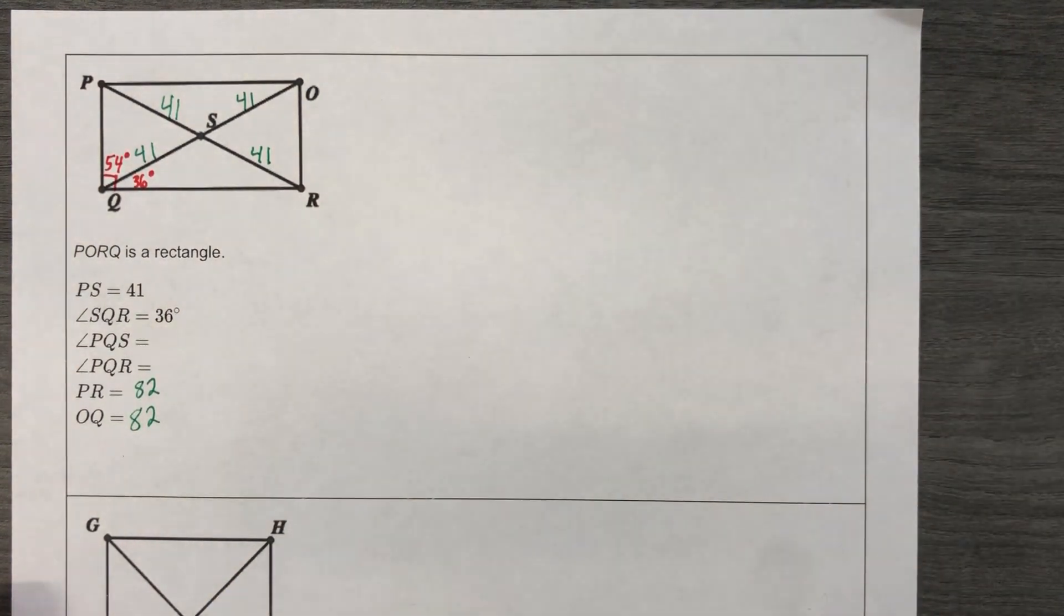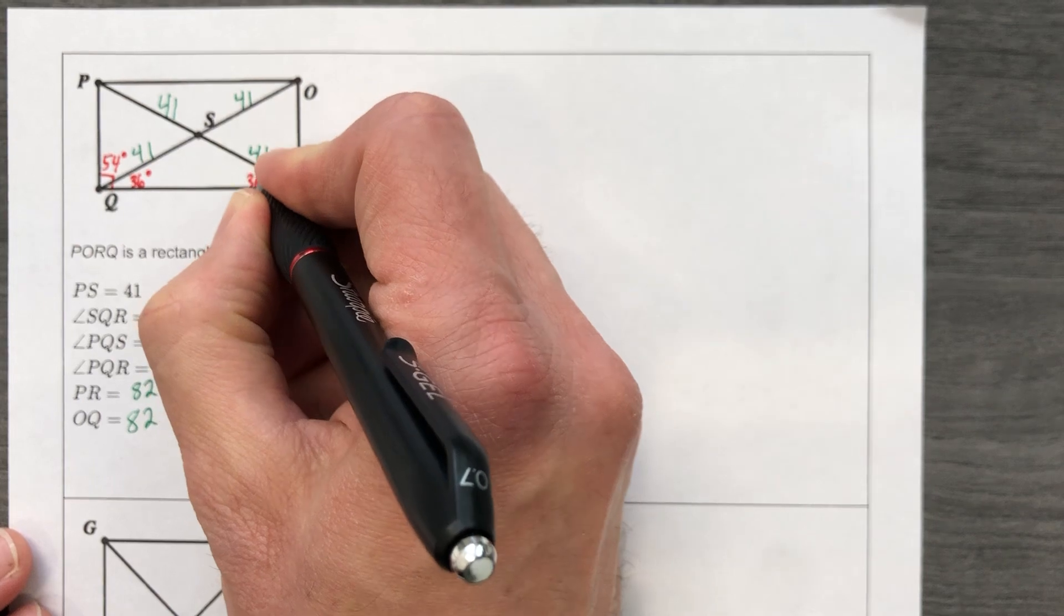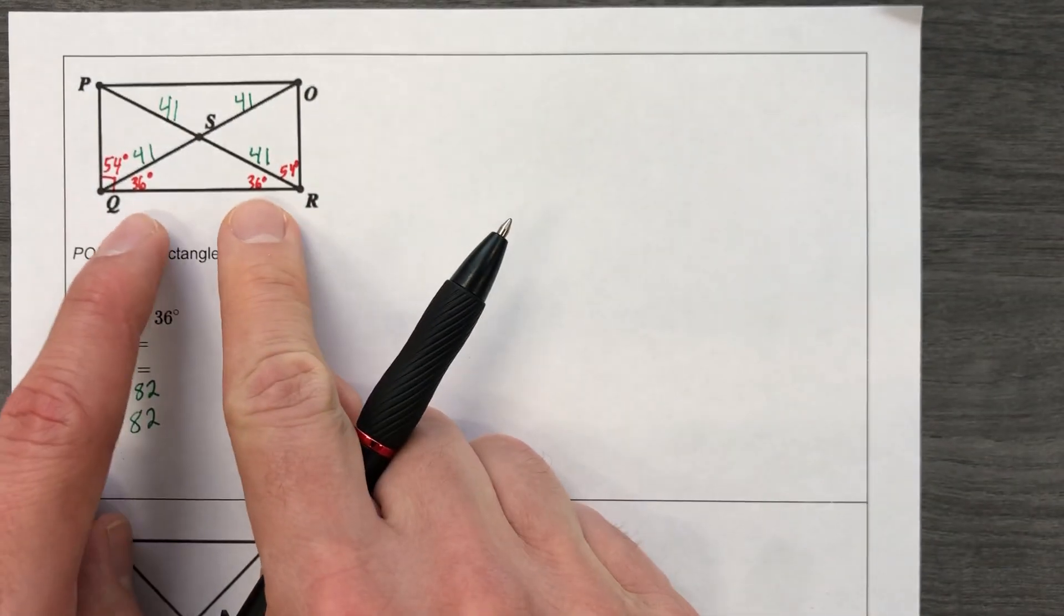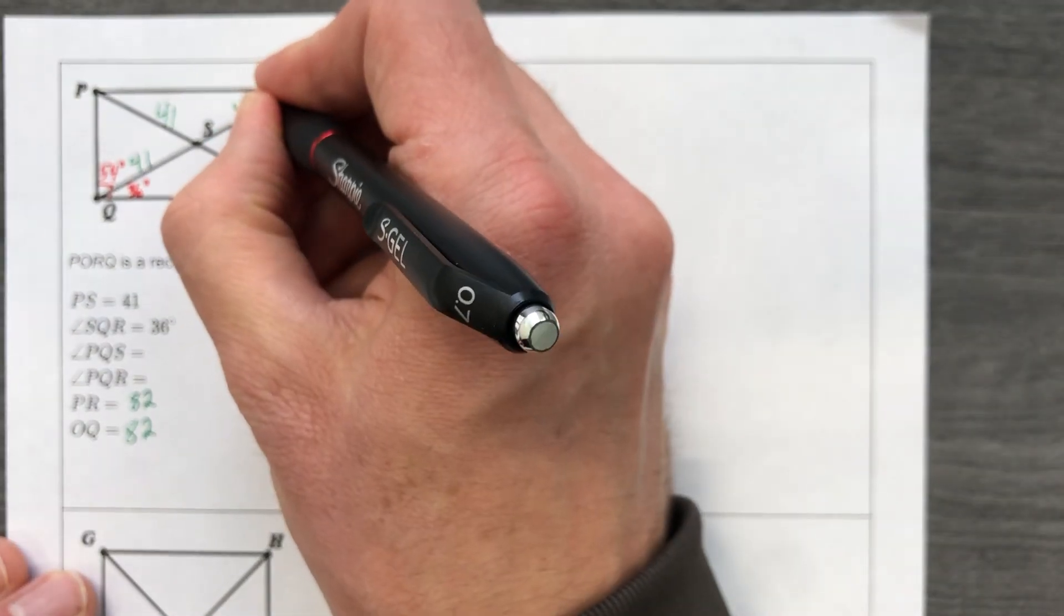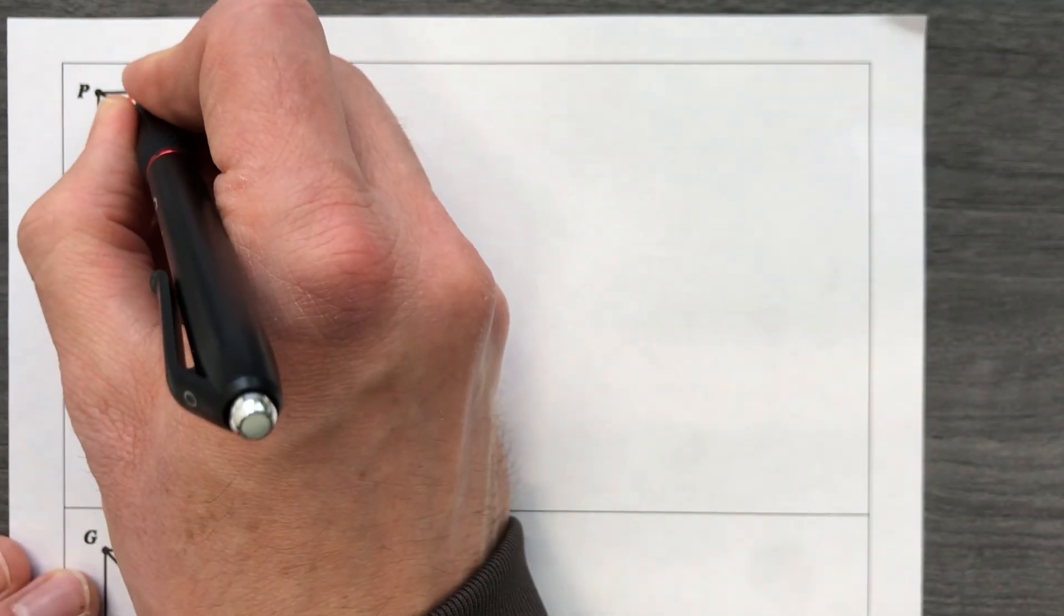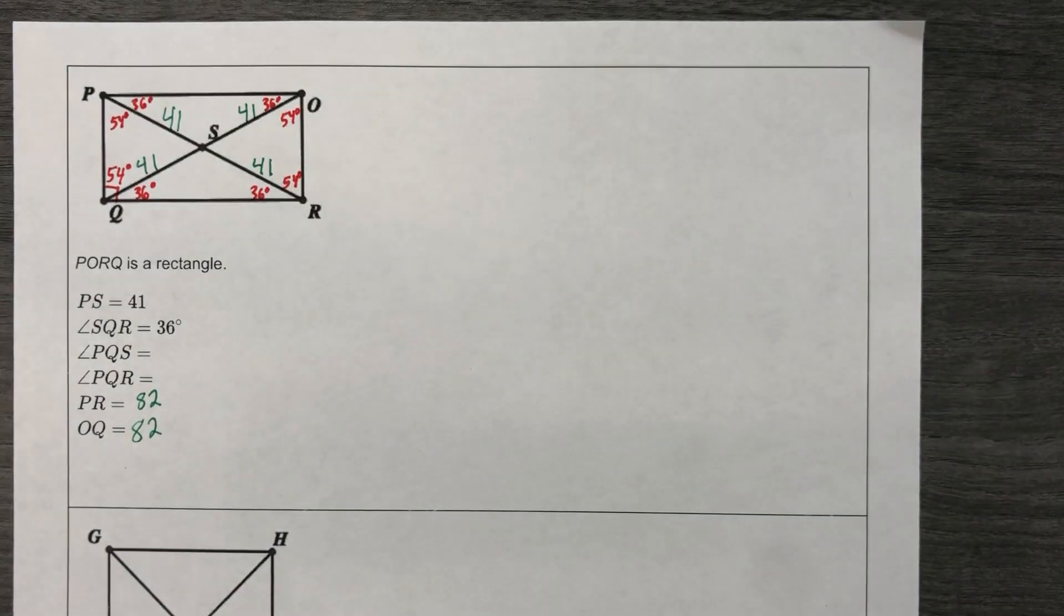And if you want to get technical, and let's get technical, this is also 36. And you don't have to write all this. But everything that looks to be 36 is 36. You don't always go based on the way things look. But, 36, 54, 36. Often your intuition can be correct in those things.